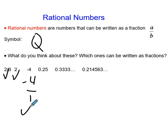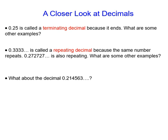0.25 - if you're good at mental math, you might realize 0.25 is the same as one quarter, so yes, that can be a fraction. The next one is trickier: 0.3333 going on forever is actually one third and can be written as a fraction. But what about this last one, 0.214563? You can't just write 0.214563 over 1, so let's take a closer look at these decimals.